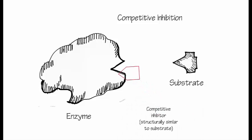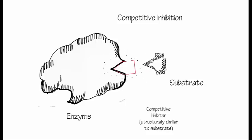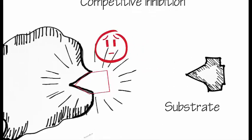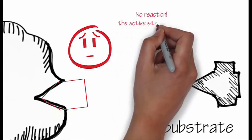When a molecule competes with the substrate for the active site, it actually prevents the substrate from binding, therefore preventing the enzyme from doing its job. This type of inhibition is called competitive inhibition.